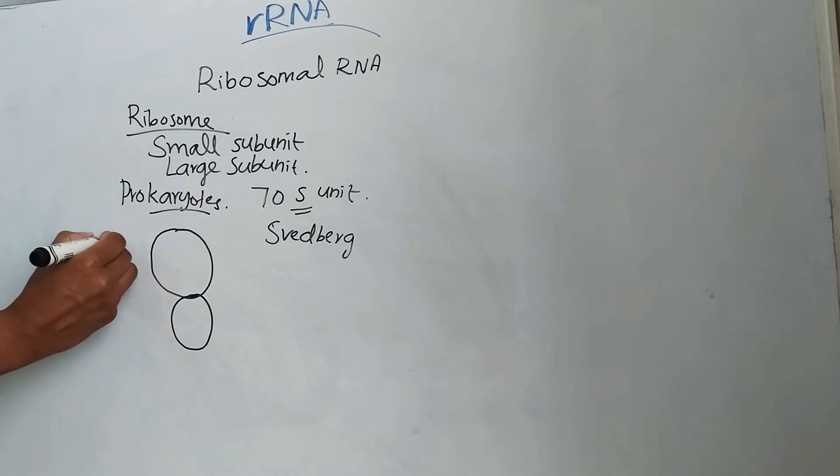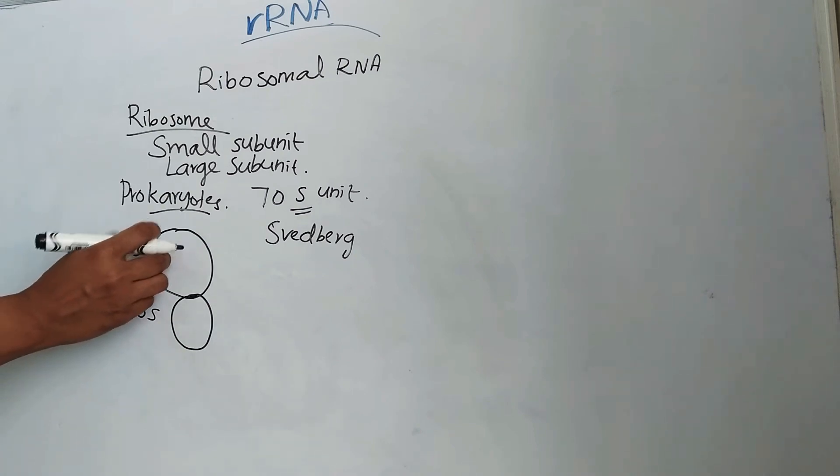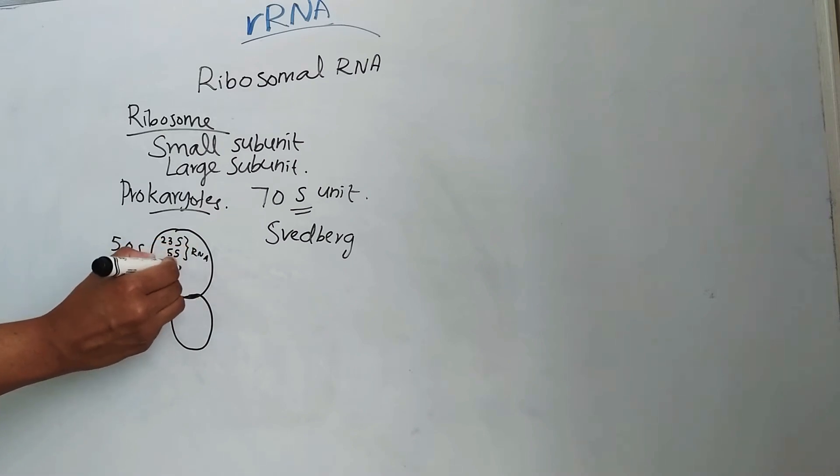Larger subunit is 50S and smaller one is 30S. This 50S is made up of 23S RNA, 5S RNA, and 34 proteins.